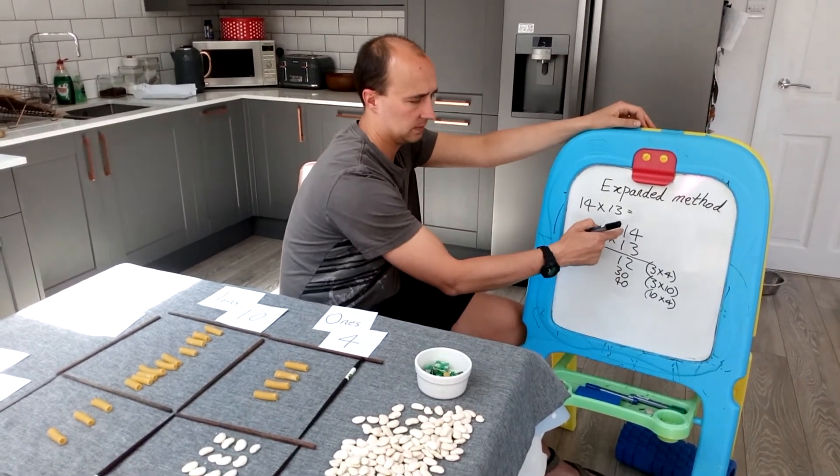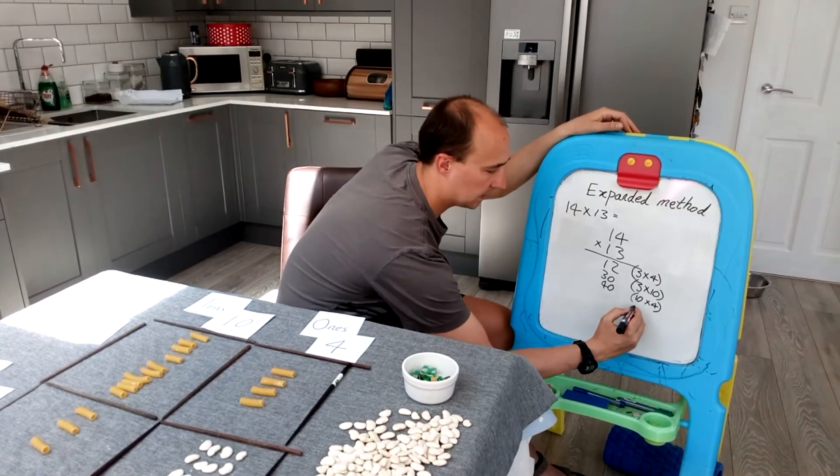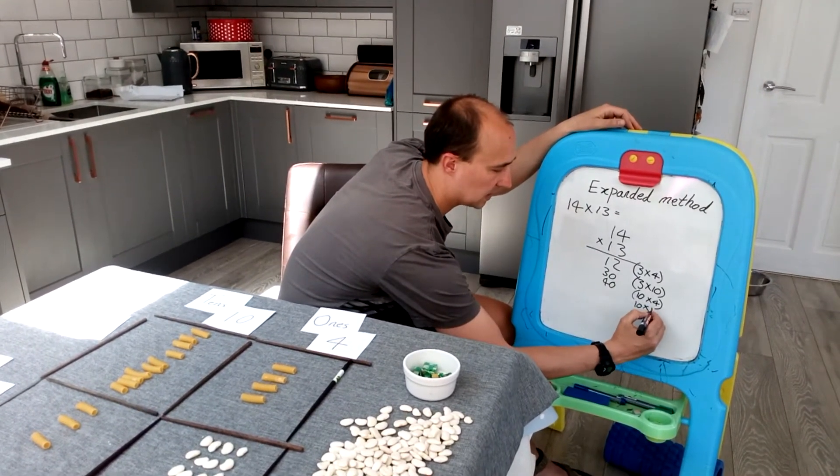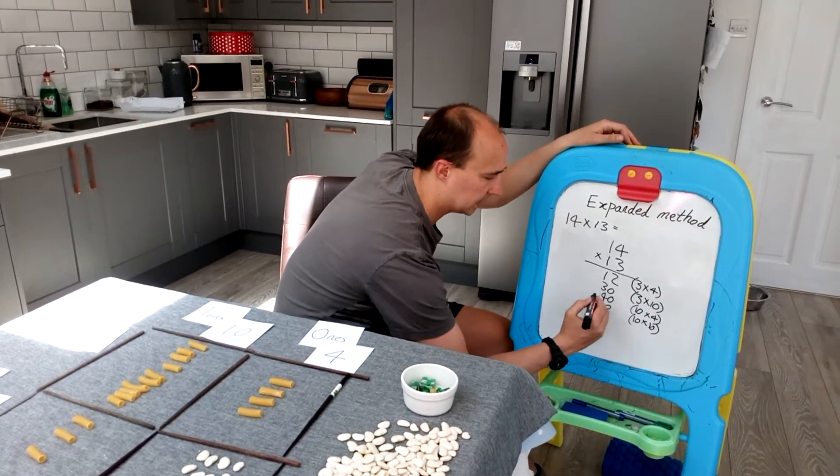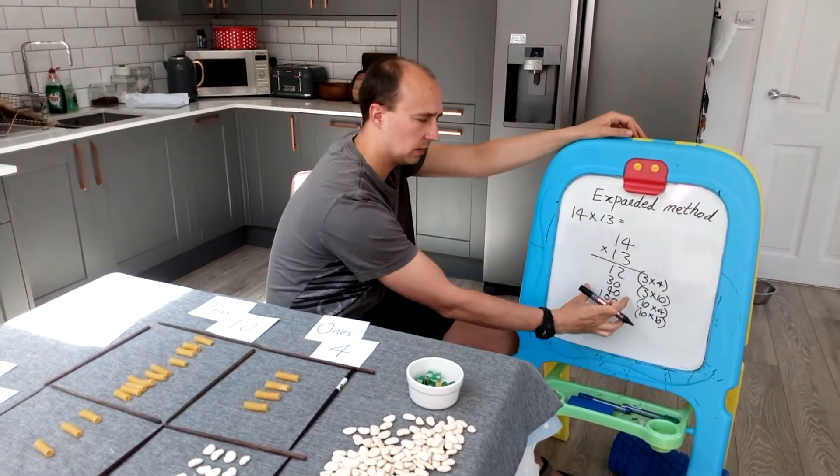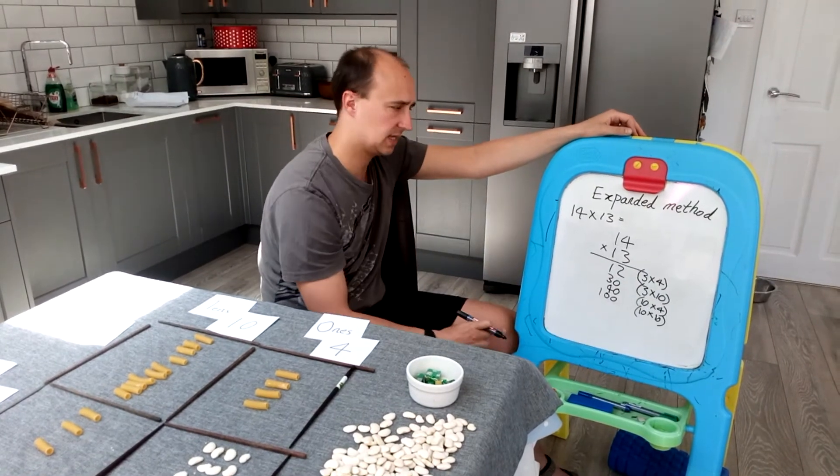And now I've got 10 multiplied by 10. 10 times 10, which is 100. And again, just make sure that the children are really lining up, understanding place value.